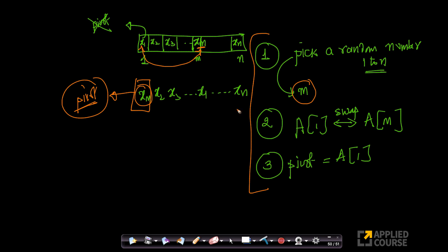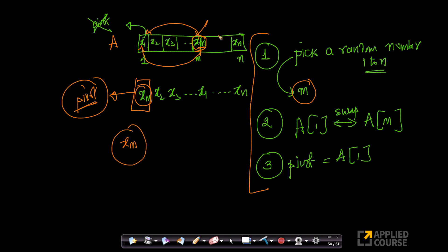The only change is: at every step, given an array a[1] to n that I have to apply quicksort on, pick a random element, swap it with the first element, and then recursively keep doing it. Now, this xm is randomly picked, which means xm has a very, very low probability that it will be the smallest element.